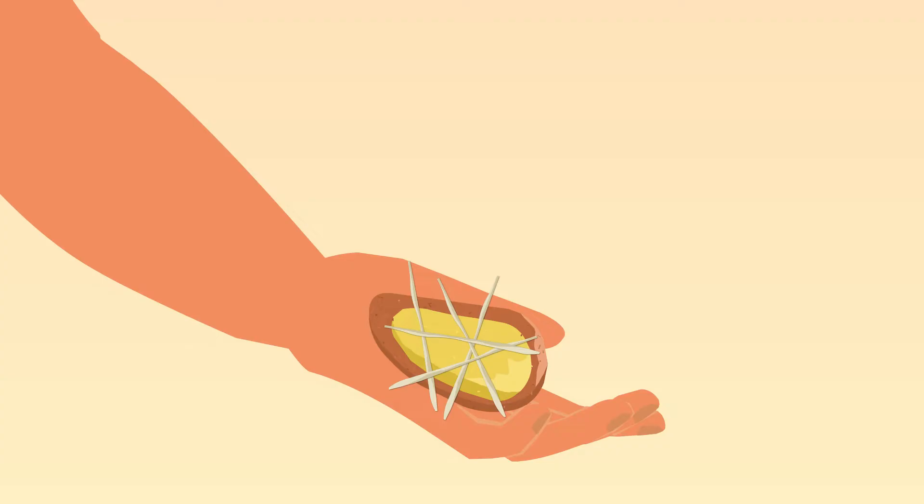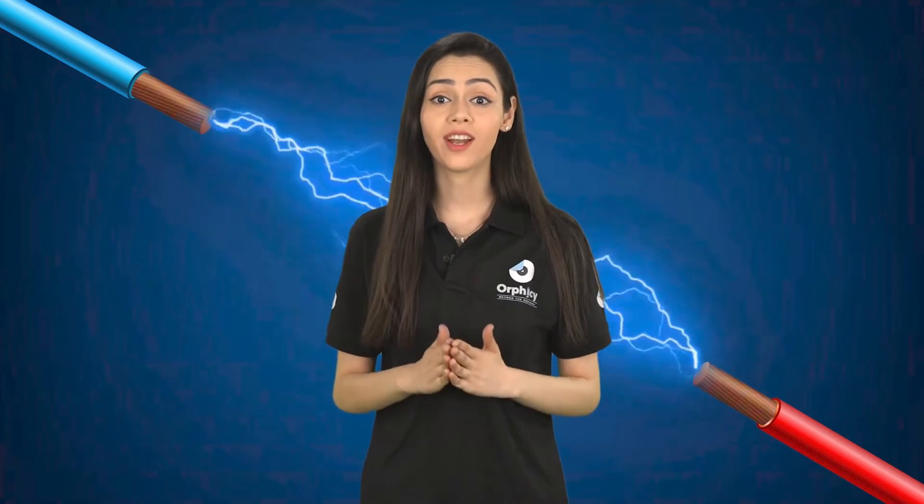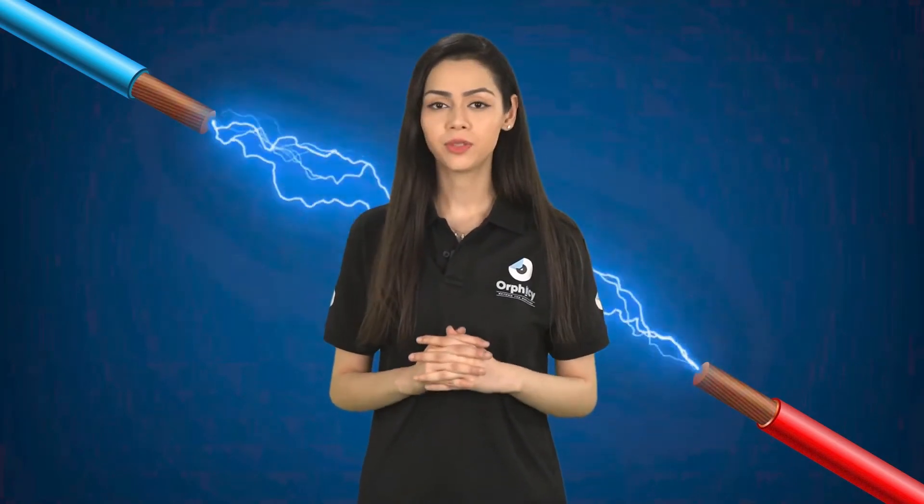In Thales' language, amber was called electron. For the rest of the time, that was all anybody knew about electricity. We had to wait for another 2200 years before new investigation could be made into amber's property.